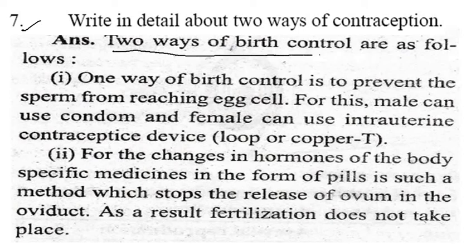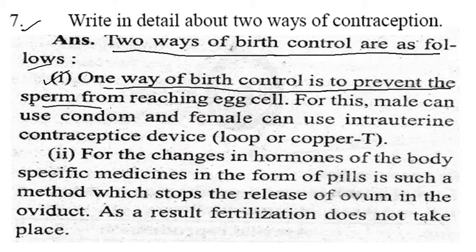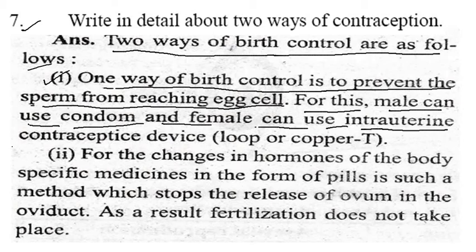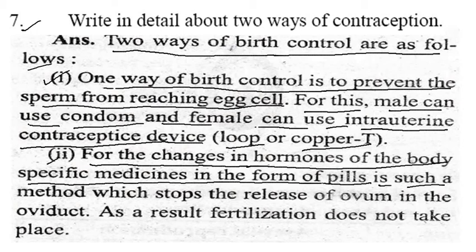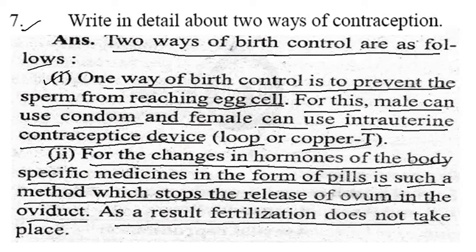The two ways of birth control are: first, prevent the sperm from reaching the egg cell — for this, the male can use a condom and the female can use an intrauterine contraceptive device (IUD or copper-T). Second, changing hormones of the body — specific medicines in the form of pills stop the release of ovum into the oviduct; as a result, fertilization does not take place.